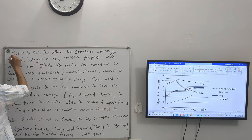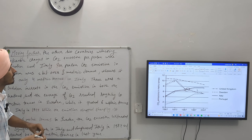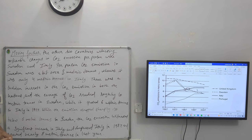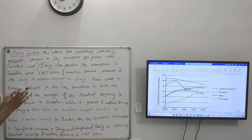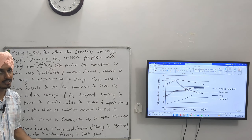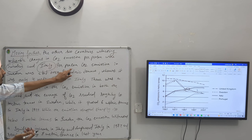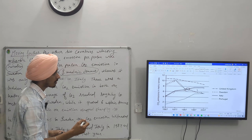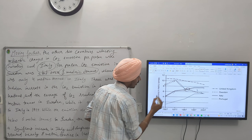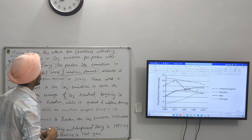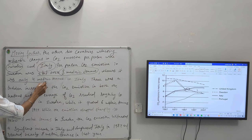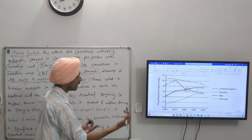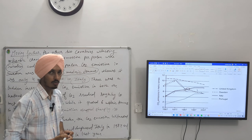Moving further — the other two countries witnessing noticeable changes in CO2 emission per person were Sweden and Italy. I am making sure the examiner knows I am now discussing Sweden and Italy. Per person CO2 emission in Sweden was a bit over 8 metric tons, whereas it was only 4 metric tons in Italy in the starting year.